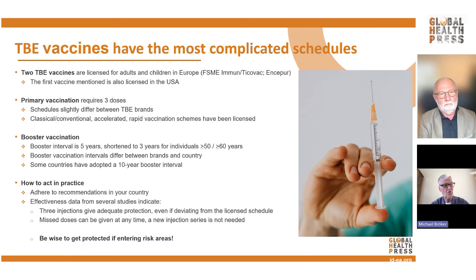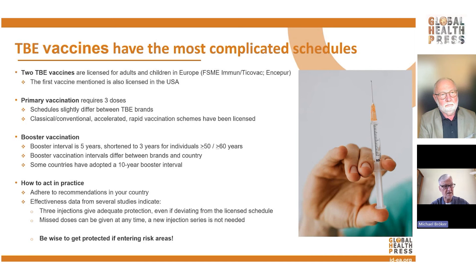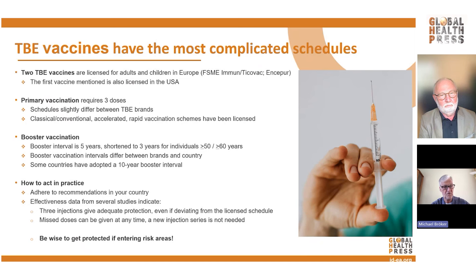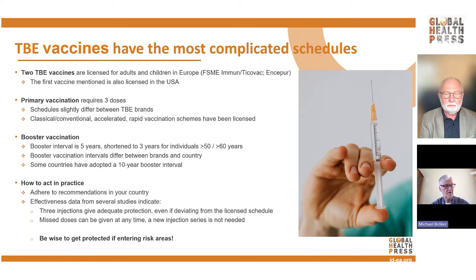In addition to the classical schedule, accelerated or rapid schedules have been developed for when quick protection is needed. For both FSME-Immune and Encepur, the second dose can be applied two weeks after the first injection instead of one to three months. Additionally, a rapid vaccination schedule licensed for Encepur applies three vaccine doses at day zero, day seven, and day 21. After receiving three TBE vaccine doses by either brand or schedule, the vaccinee is protected. For booster vaccinations, the first booster dose should be given three years after completing the primary series, with further boosters every five years. If the rapid schedule was used for Encepur, the first booster should already be given after 12 to 18 months.